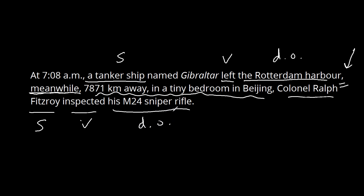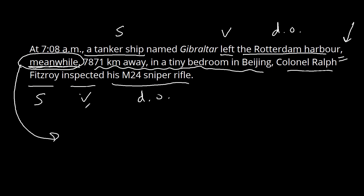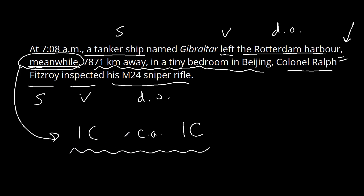We have two clauses, and 'meanwhile' is trying to do the work of connecting them. But the rule to remember is that a conjunctive adverb should not come in the middle of two independent clauses — independent clause, conjunctive adverb, independent clause — that's not the best way to do this. What we want to do is stick a period before the conjunctive adverb, or we could use a semicolon. The idea is that a conjunctive adverb is a heavyweight conjunction — it wants to be by itself, signaling that we're starting something quite new and need a strong break.